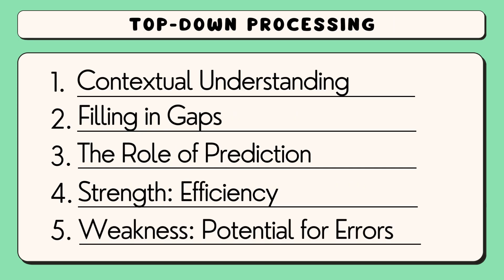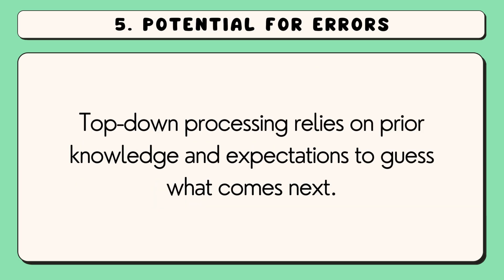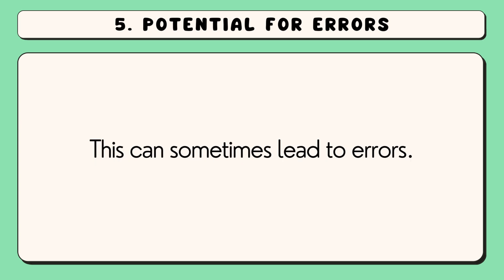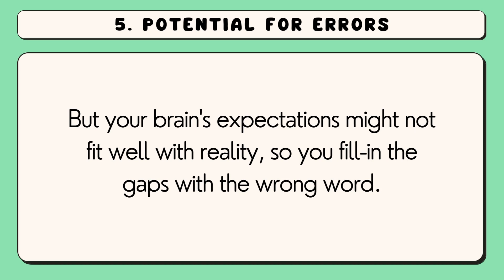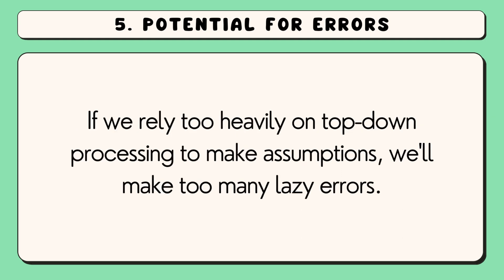And now let's examine a weakness: potential for errors. Top-down processing relies on prior knowledge and expectations to guess what comes next, and this can sometimes lead to errors. For example, you might not notice a typo in a sentence because your brain automatically corrects the error based on what it expects to see. But your brain's expectations might not fit well with reality, so you fill in the gaps with the wrong word. If we rely too heavily on top-down processing to make assumptions, we'll make too many lazy errors.